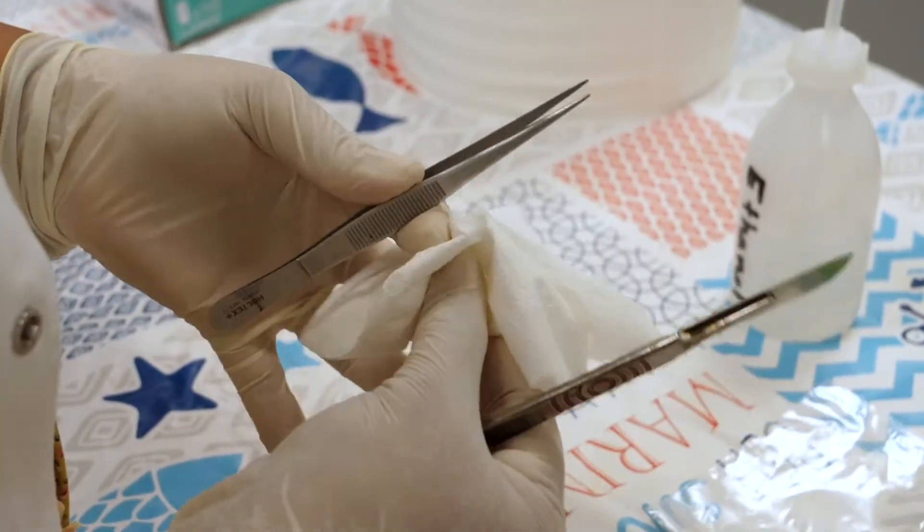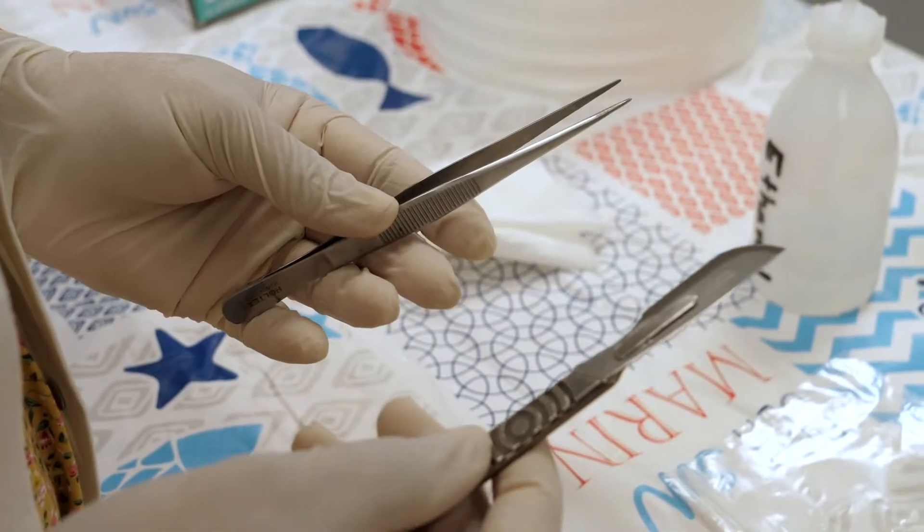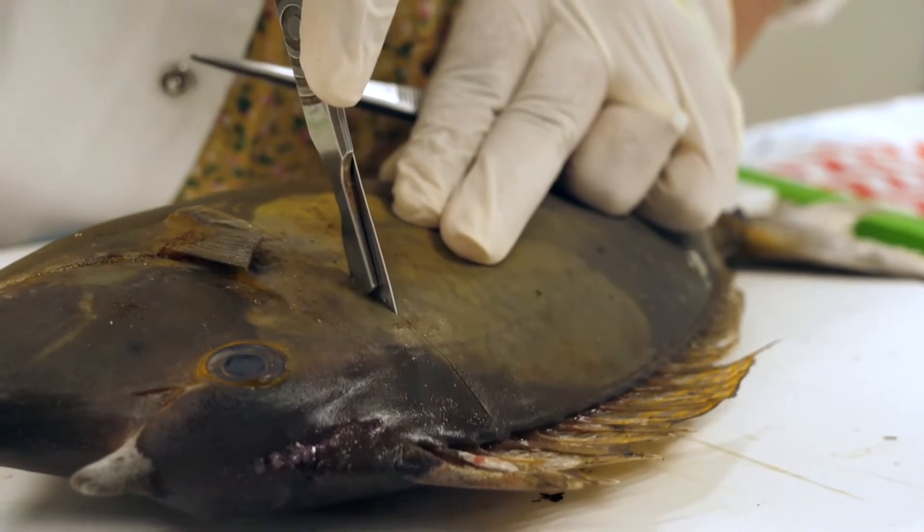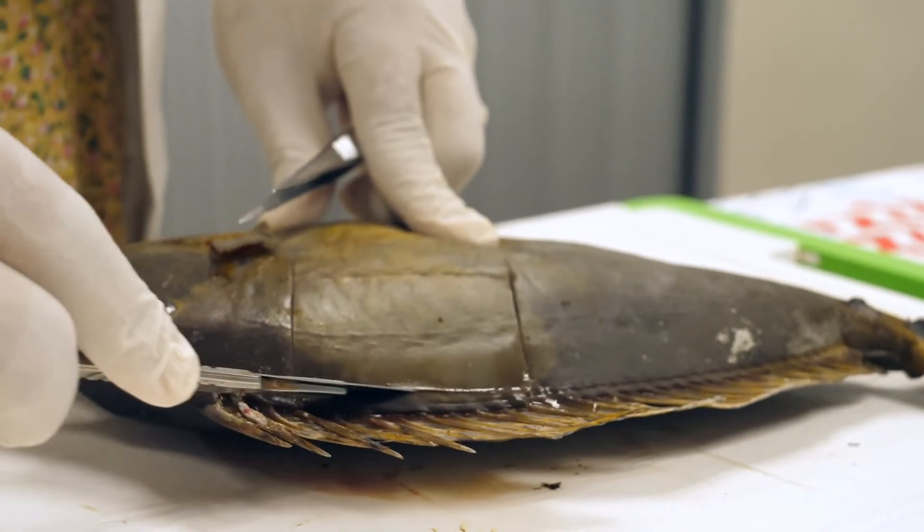Once the equipment has been disinfected, it should only come into contact with the fish muscle. The scalpel is used to cut a 3-4 cm square piece of the dorsal muscle.